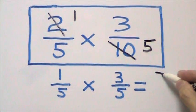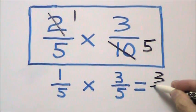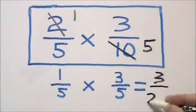One times three gives us three. Five times five gives us twenty-five.